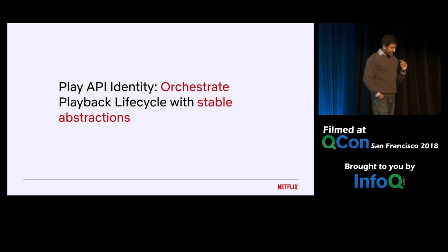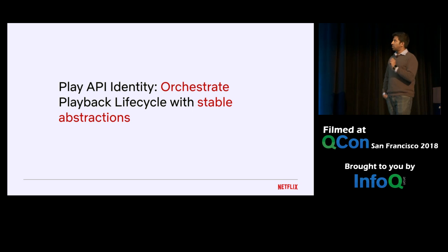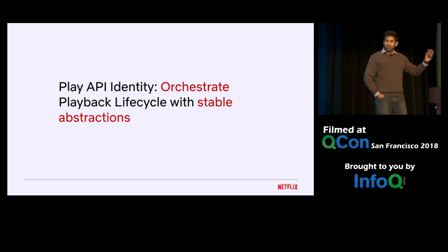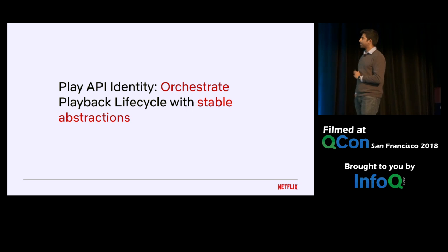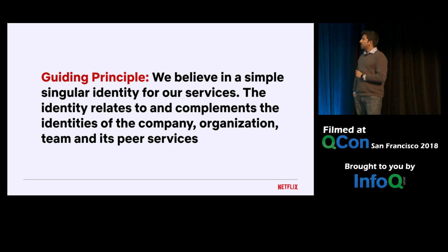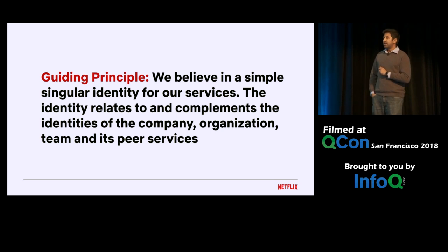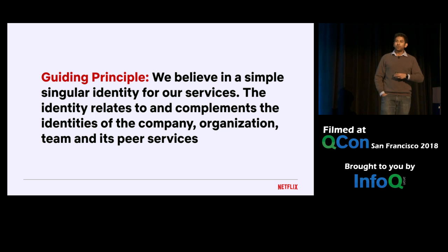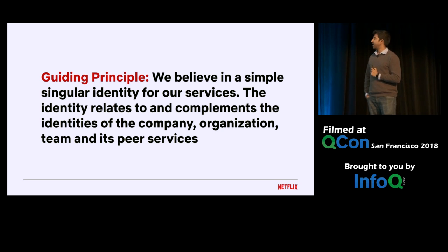In essence, this captures the role of the play API service: we broke open from a monolith, have separate domain-specific playback microservices, and need a specific orchestration layer. We defined the play API's identity as: to orchestrate the playback lifecycle while providing stable abstractions between devices and all domain-specific playback services. The guiding principle here is that we believe in simple, singular identities that relate to your organization, your company, and complement the identity of all peer services in your ecosystem.